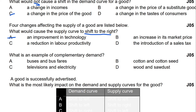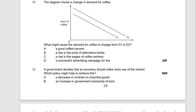Question number five: what is an example of complementary goods? Complementary goods complete each other — if we purchase one product, we need the other to use it. For example, car and petrol, or mobile phone and SIM card. Option C is correct: television and electricity. If you buy a television, you need electricity to run it, so they complete each other.